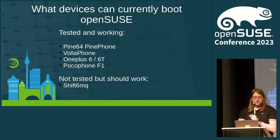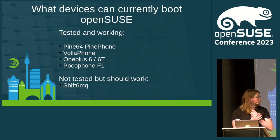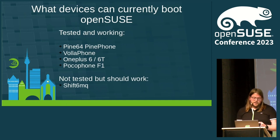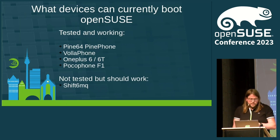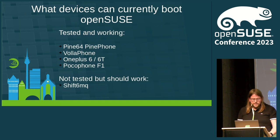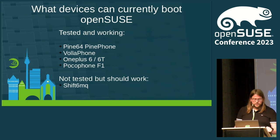What devices are currently working on OpenSUSE? We have the PinePhone with 100% functionality. We have the Pocophone F1, OnePlus 6 and 6T, which are Android-based devices. And the Volla phone, which is also an Android-based device but with some particular needs. There's also one not yet tested but which should work, because it has the same hardware as the OnePlus and Pocophone F1 — the Shift 6MQ. Those three are Qualcomm Snapdragon 845.